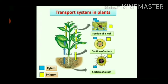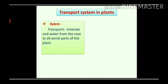Let us see the transport system in plants. There are two types of transport system in plants, indicated by two colors: blue color and yellow color. Blue color indicates xylem and yellow color indicates phloem. Xylem transports minerals and water from the root to all aerial parts of the plants — aerial parts means stem, leaves, branches, etc.